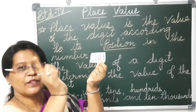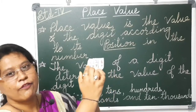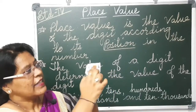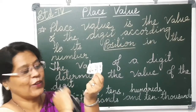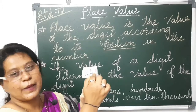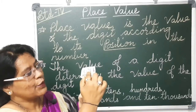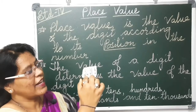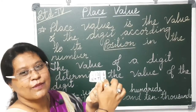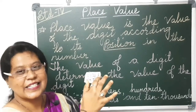Yes. Now first we will read the number: 6, 2, 1, 5. It is a 4 digit number. Now 6 is in which place value? What is the place of 6? It is units. 2 is in tens. 1 is in hundreds and 5 is in thousands. So these are the place values of the digits — this is the position of each digit: units, tens, hundreds and thousands.